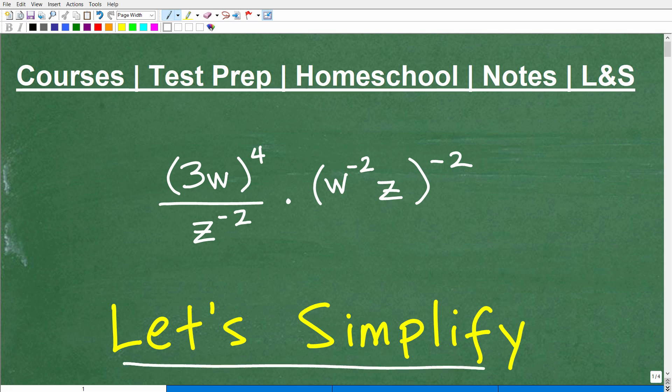Okay, let's simplify this expression right here. So we have 3 to the W, and this is of course in parentheses to the 4th power over Z to the negative 2 times parentheses W to the negative 2 power times Z in parentheses to the negative 2 power.